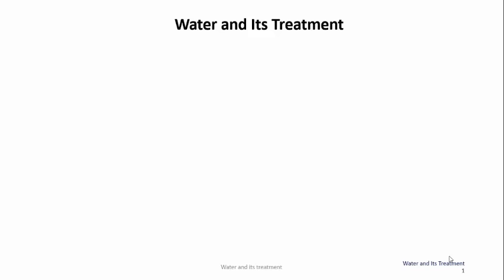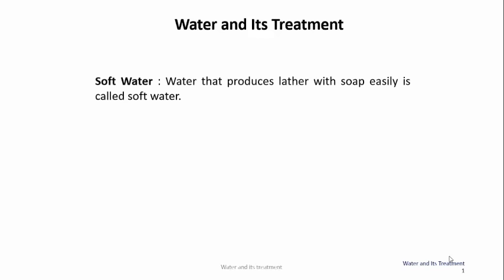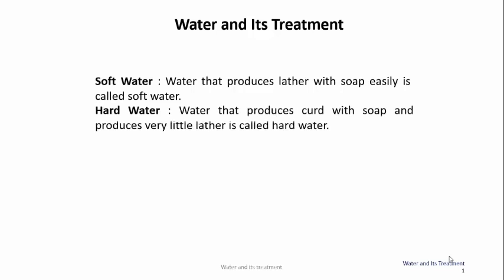As we know, there are two types of water. Soft water produces lather with soap easily. The other is called hard water, which produces curd — also called precipitate — when it reacts with soap. It produces very little lather, so therefore it is called hard water.